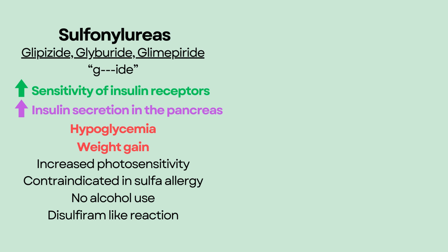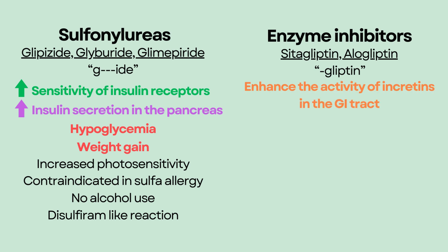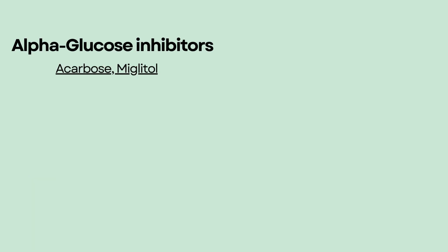Enzyme inhibitors include sitagliptin and alogliptin, with the suffix '-gliptin.' Enzyme inhibitors enhance the activity of incretins, but they can increase digoxin levels. Alpha-glucosidase inhibitors delay absorption of glucose in the GI tract.